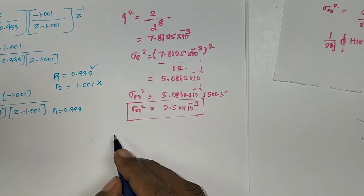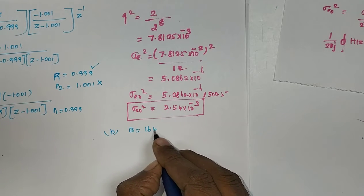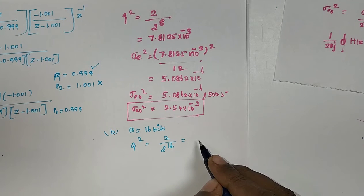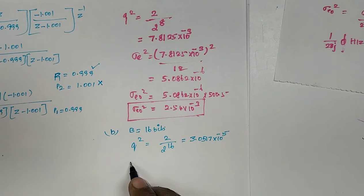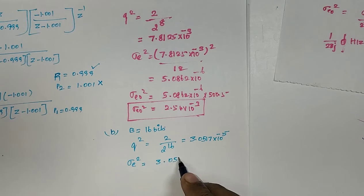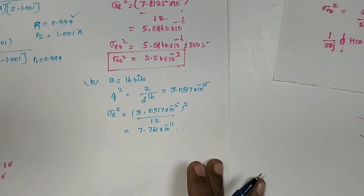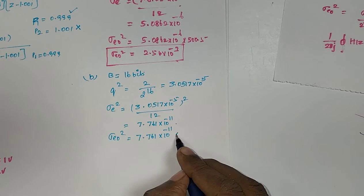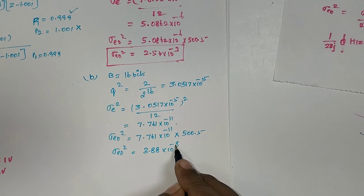Case 2: b = 16 bits. q = 2/2^16 = 3.0517×10⁻⁵. Then σ²e = (3.0517×10⁻⁵)²/12 = 7.761×10⁻¹¹. Output noise power σ²eo = 7.761×10⁻¹¹ × 500.5 = 3.88×10⁻⁸.